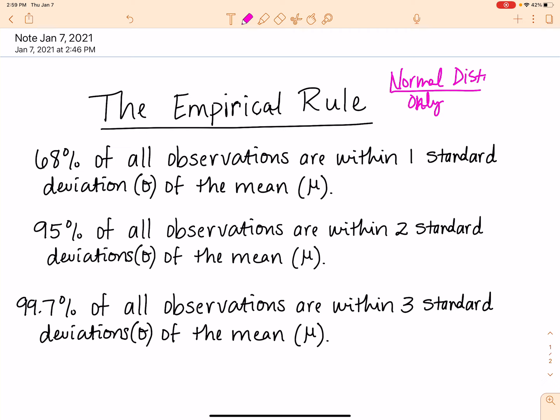So the empirical rule itself indicates that 68 percent of all my observations are within one standard deviation of the mean, 95 percent are within two standard deviations of the mean, and 99.7 percent are within three standard deviations of the mean.